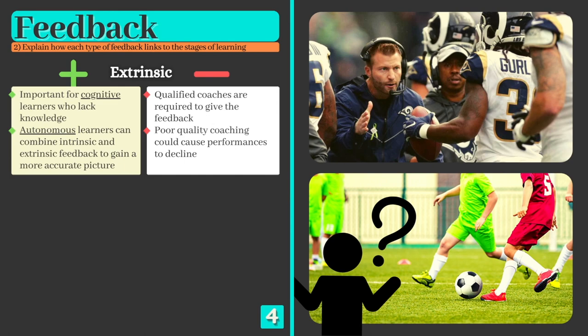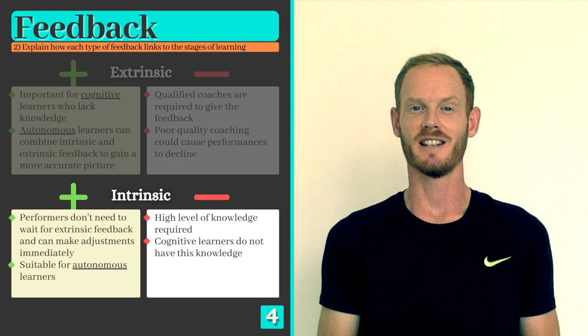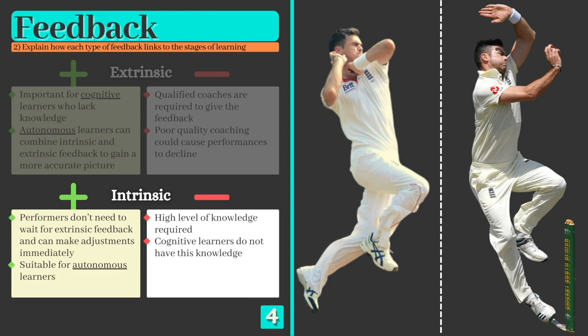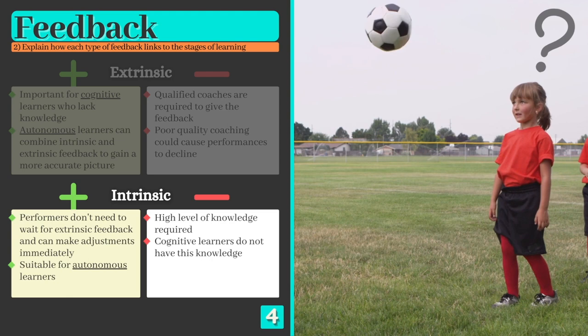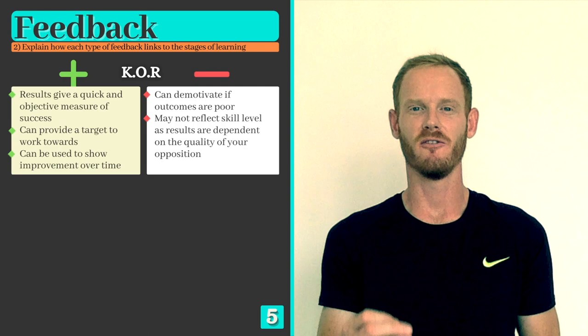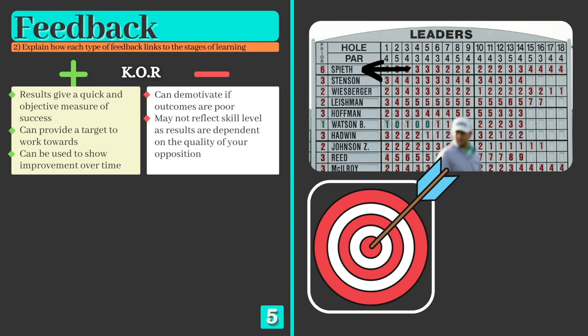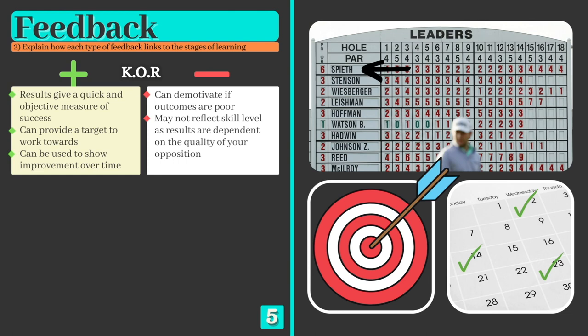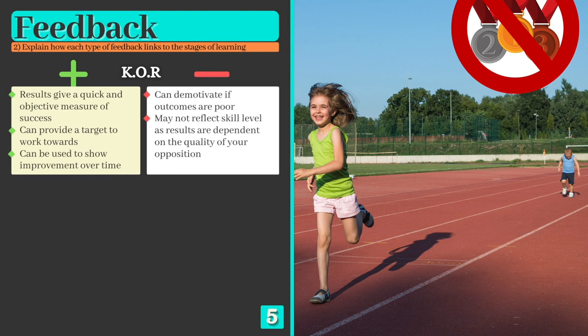Because intrinsic feedback comes from within, performers don't need to wait to hear their coach's opinion and can make adjustments immediately. However, a high level of knowledge is required, meaning intrinsic feedback has limited relevance for cognitive learners who don't yet know what to adapt or how to go about it. Knowledge of results gives a quick and objective measure of success, can provide a target to work towards — for example, moving up the rankings in a golf tournament — and can show improvement over time if recorded regularly. However, it should not be provided to cognitive learners, as outcomes are likely to be poor and could be demotivating. Additionally, knowledge of results may not reflect skill level — for example, coming third against strong opposition may be more impressive than winning against weaker runners.